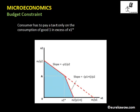In the second case, the consumer has to pay a tax t only on the consumption of good one in excess of x1 star. When consuming less than x1 star units, the consumer pays the original price. The original budget line passes through m by p2 and m by p1, and for x1 star units the budget line remains the same.